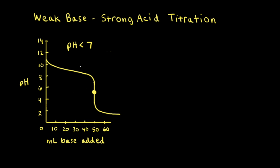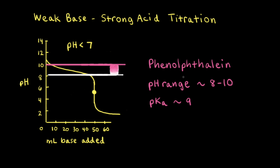Let's choose an indicator for a weak base–strong acid titration. For a weak base–strong acid titration, the equivalence point occurs at a pH less than 7. If we try to use phenolphthalein — which changes from colorless to pink between pH 8 and 10 — and we stopped when the color change occurred, we'd be stopping the titration too early. So phenolphthalein is not a good choice as an acid-base indicator for this particular titration.